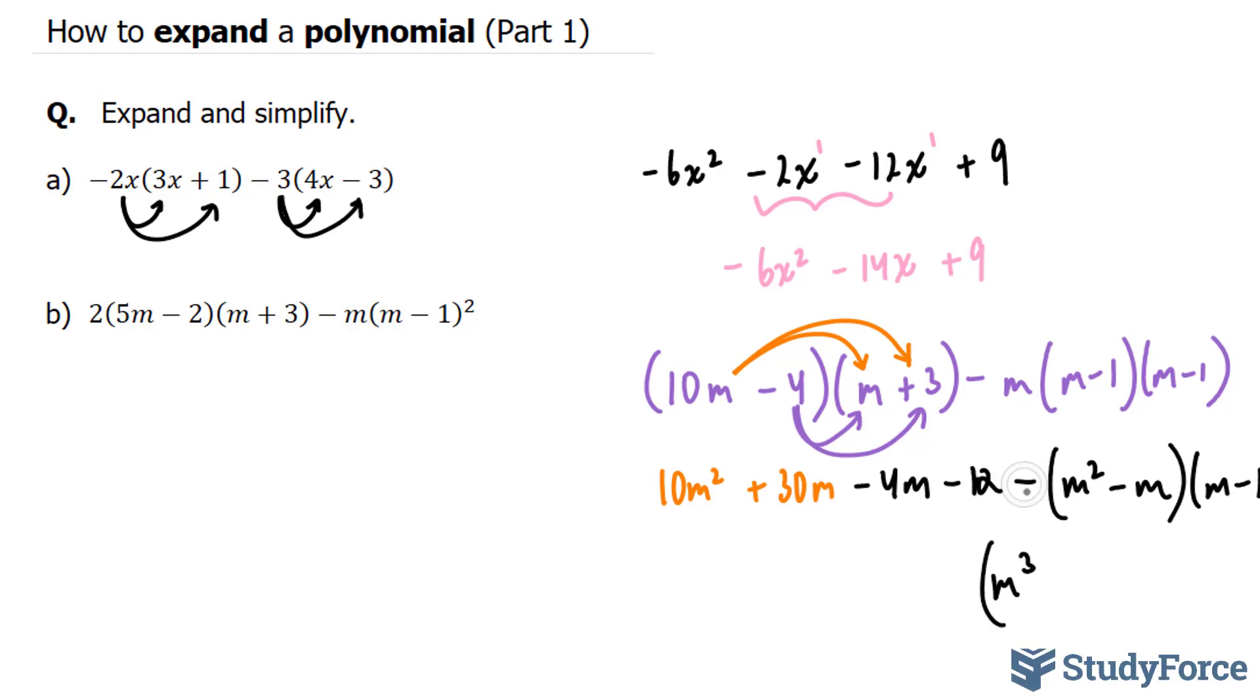And remember, we have this minus at the front. And so everything you multiply within these two binomials will be influenced by that minus at the very end. Let me show you what I mean.